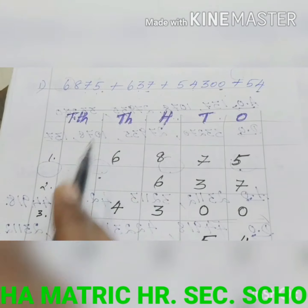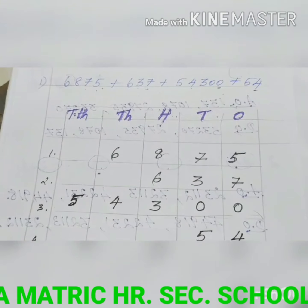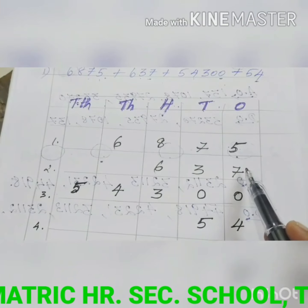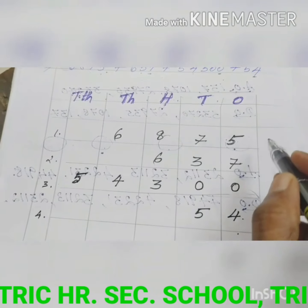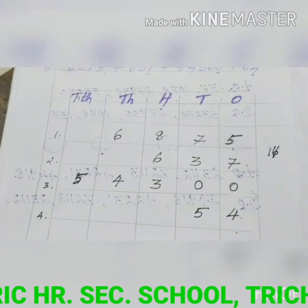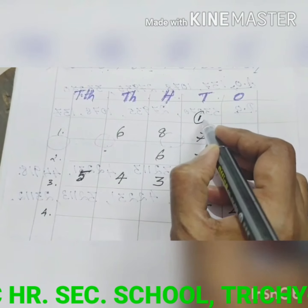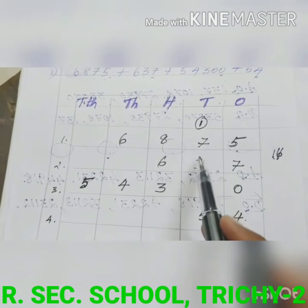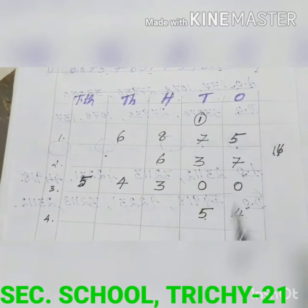Look at the ones place: 5 plus 7 is 12, plus 4 is 16. Put six in the ones place and carry over one to the tens place. Now add the tens place: 7 plus 3 is 10, plus 5 is 15, plus 1 is 16. Put six in tens and carry over one to the hundreds place.